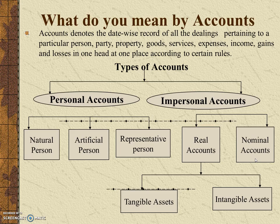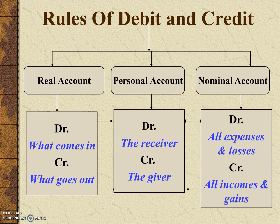The nominal account belongs to the expenditures and losses of the company, as well as the income or gain of the company. Now let's look at the rules for debit and credit under these three accounts. For the real account, the rule is: debit what comes in and credit what goes out.